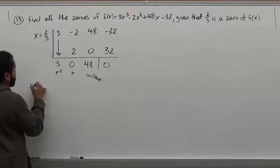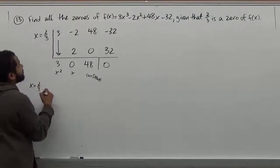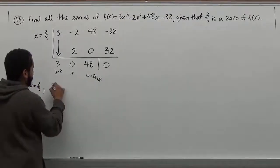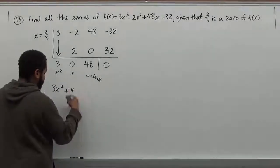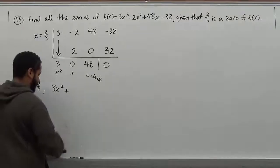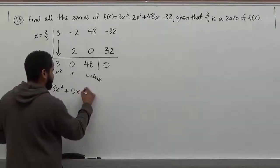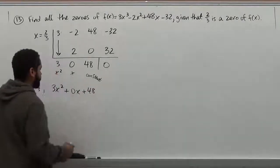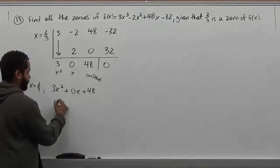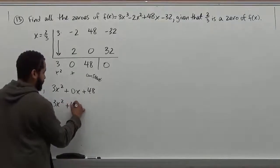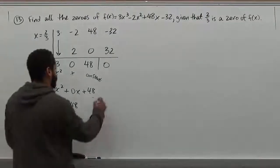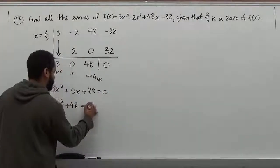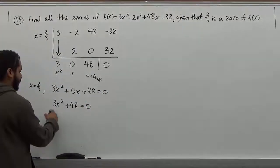So x = 2/3 is the first solution. The next two are going to be based on 3x² + 48 because we have no x term, right? So the way it looks after doing this is 0x + 48 and the 0x just goes away. So we have 3x² + 48 and we can try to solve these. So we have the first zero, the second zeros are going to come from this. So this is actually equivalent to 0 if we want to continue solving.